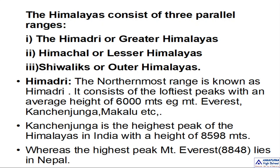Himadri, which is also known as greater Himalayas, is the northernmost range. It consists of the loftiest peaks. Mount Everest, Kangchenjunga, Makalu — all these highest peaks are found in the Himadri. The Himadri consists of the loftiest peaks with an average height of 6,000 meters. Mount Everest is also part of Himadri, and Kangchenjunga is the highest peak of the Himalayas in India.